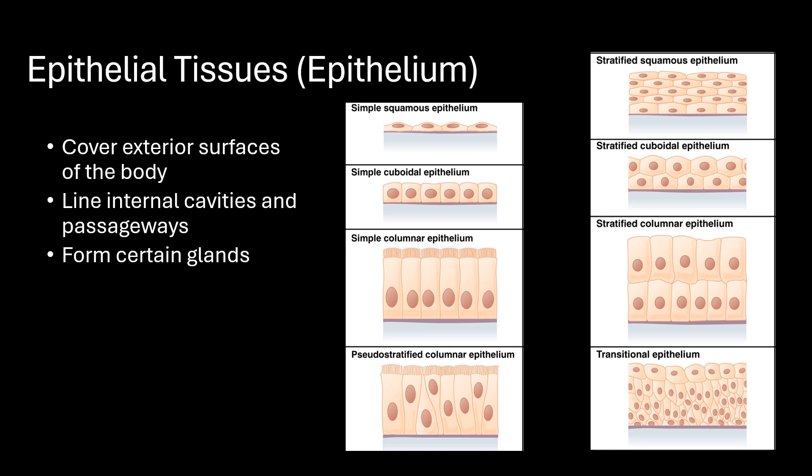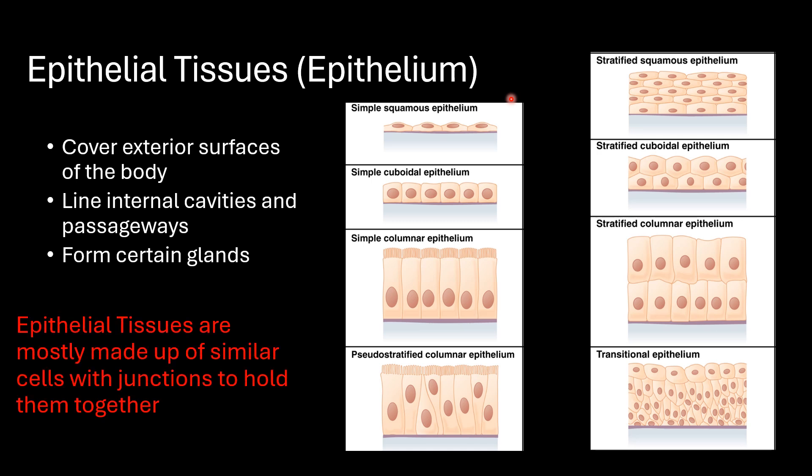This concludes our video on epithelial tissues, also known as epithelium. This video focused on epithelia that cover bodily surfaces and line internal cavities and passageways. They do form glands, but that will be covered elsewhere. The big thing about epithelia is that they're made up mostly of cells with numerous different junctions to hold them together. In the next video, we'll cover connective tissues, where there are fewer cells per volume of tissue, but it's the products of the extracellular matrix that they produce and maintain that really matters.